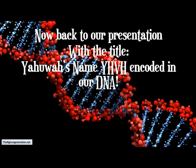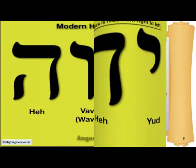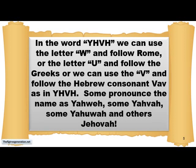Now back to our presentation with the title: Yahuwah's name, Yod-Heh-Wav-Heh, encoded in our DNA. Here we have the four Hebrew letters Yod-Heh-Wav-Heh — Hebrew is read from right to left. In the word Yod-Heh-Wav-Heh, we can use the letter W and follow Rome, or the letter U and follow the Greeks, or we can use the V and follow the Hebrew consonant as in Yahweh or Yahuwah. Some pronounce the name as Yahweh, some as Yahwah, some as Yahuwah, and others as Jehovah.